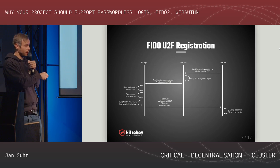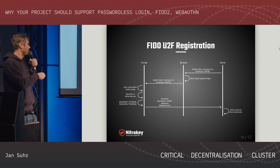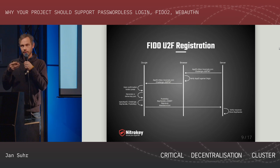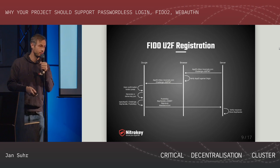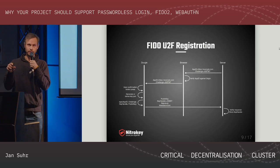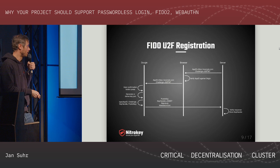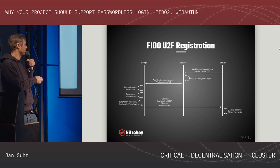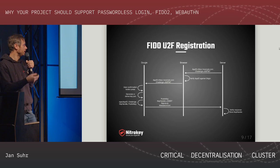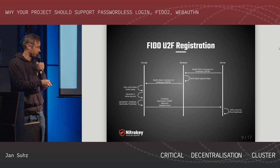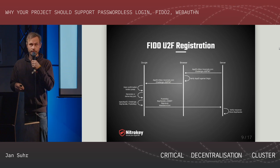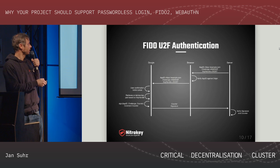Then this request is sent to the USB dongle. User confirmation means the user usually has to press or touch the device to confirm they want to execute the registration. The device generates a website- and account-specific cryptographic key pair — an elliptic curve key pair — and performs a cryptographic signature over several parameters. It sends back a public key, a key handle, the signature, and an attestation key so the server can verify the response matches the request, and then registers that key handle to the user's account.